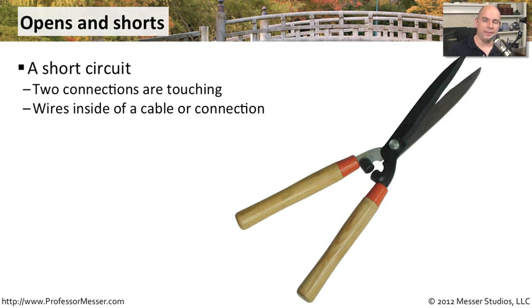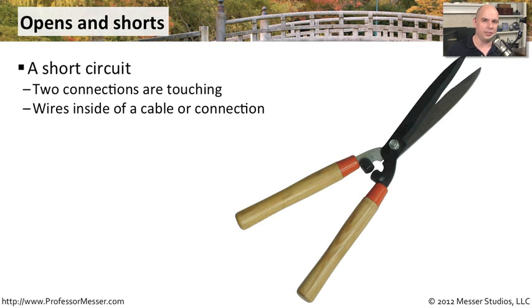A short circuit is when you have a connection where two wires within that circuit may be touching. That can certainly cause problems, because the signal is going to be shared across both of those, and on a network that might cause outages. The traffic is not able to go from one side to the other. Sometimes that's hard to see, because those wires are usually inside a sheath and inside some plastic, so it's sometimes not obvious that a short circuit actually exists.